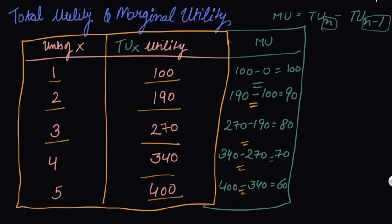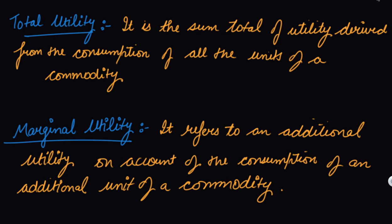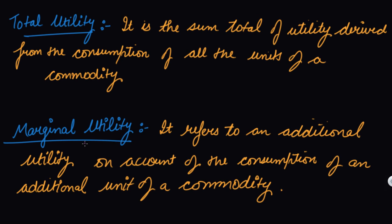Let's understand. Your total utility is the sum total of utility derived from the consumption of all the units of the commodity. From consuming one unit you derive 100 utils; from consuming two units of commodity X, you derive 190 utils of satisfaction. Marginal utility is how much additional satisfaction you are getting from consuming one additional unit.